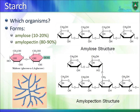In plants, the storage molecule is starch, which exists in two forms: amylose and amylopectin, with amylopectin being the majority. Amylose is mainly a straight, unbranched molecule with alpha-1,4 glycosidic bonds, with the anomeric carbon in the alpha configuration.